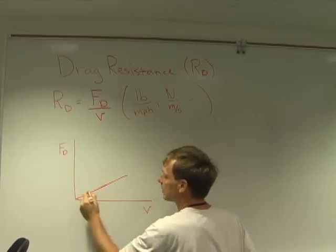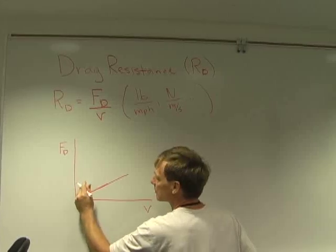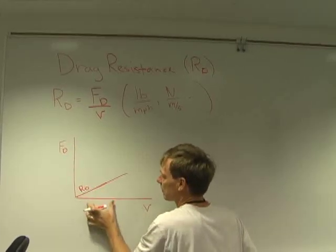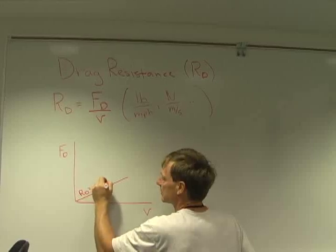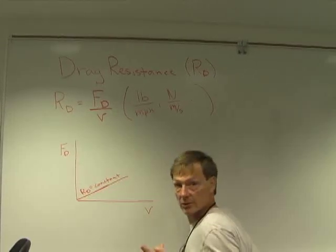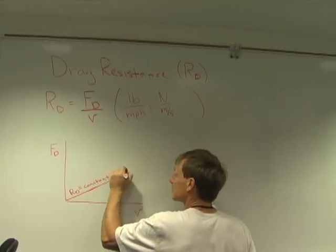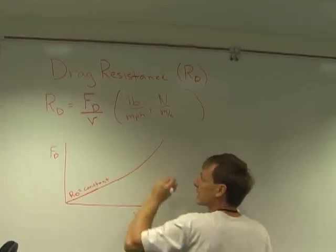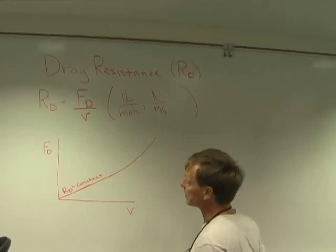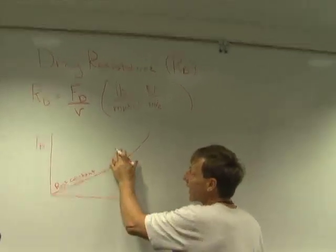So as I start out with this straight line, constant slope. The drag resistance, which is drag force over velocity, is constant. But then you get to a certain speed, and it does this. As I go faster and faster, the drag force...